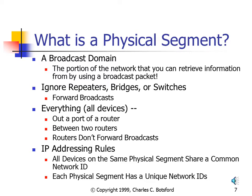Our definition of a physical segment is everything out one port of a router, or between two routers, because a router does not forward a broadcast. This is important because of our IP addressing rules — all devices on the same physical segment share a common Network ID. So all devices out one port of a router would be on the same physical segment and have the same Network ID, while each device has a unique Host ID. Each physical segment has a unique Network ID, so a router with three ports gives us three physical segments, each with its own Network ID.